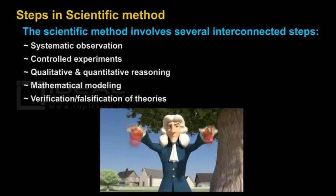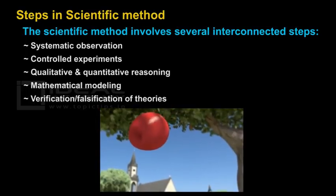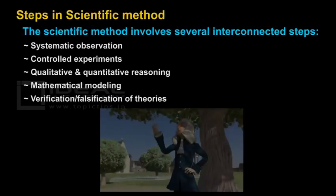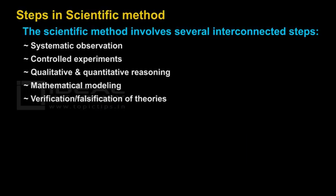And what did he do next? He went ahead and performed several experiments regarding this phenomenon. So these are the first two steps: Newton's keen observation, that is systematic observation, and then he did some experiments, that is controlled experiments.